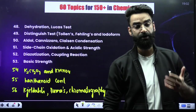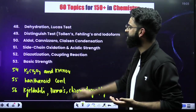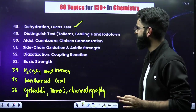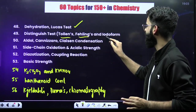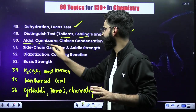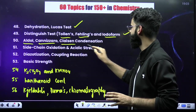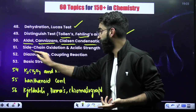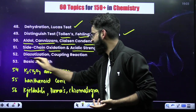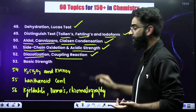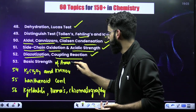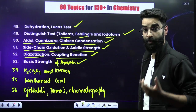In organic chemistry, what else is asked? Dehydration and Lucas test. For distinguishing tests: Tollens', Fehling's, and iodoform. Similarly, main reactions include the aldol reaction, Cannizzaro's reaction, Claisen condensation reaction. One more important topic is side chain oxidation and acidic strengths. Similarly, diazotization and coupling reactions, and basic strength of amines — one more very important topic from which questions are asked.